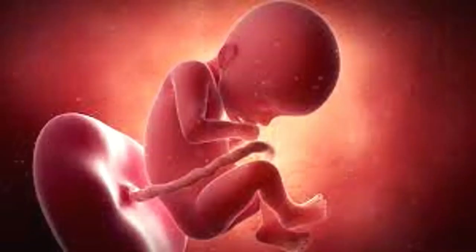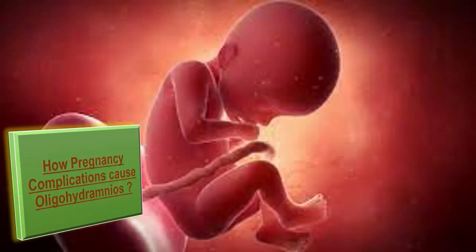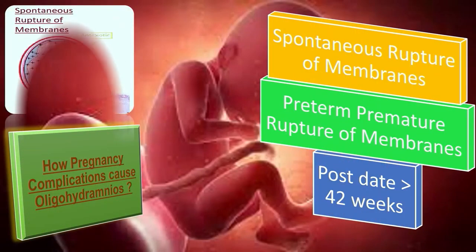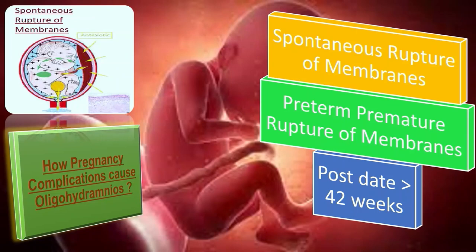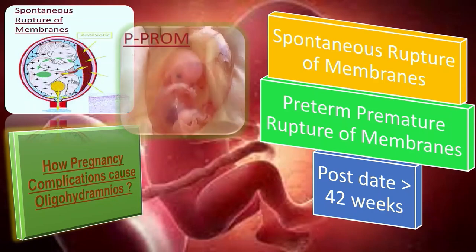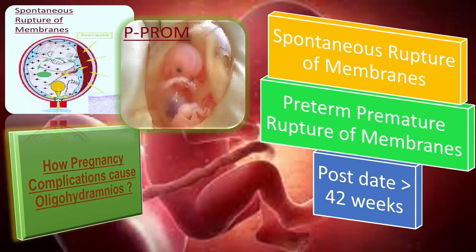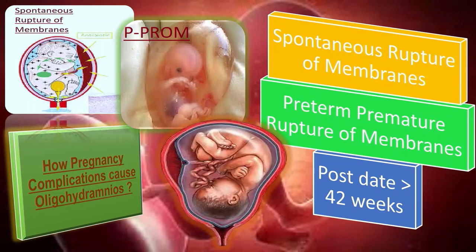Spontaneous rupture of membranes allows amniotic fluid volume to fall below optimum levels. In preterm premature rupture of membranes, there is continuous leaking or trickling of amniotic fluid resulting in oligohydramnios. In post-term pregnancy, there is redistribution of blood flow due to increased fetal weight, resulting in renal hypoperfusion and decreased urination, which may cause oligohydramnios.